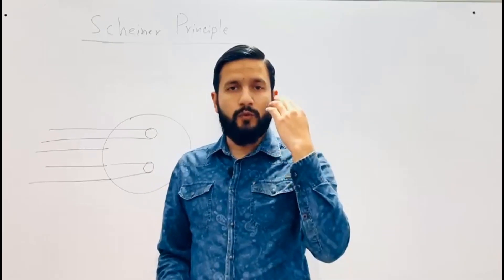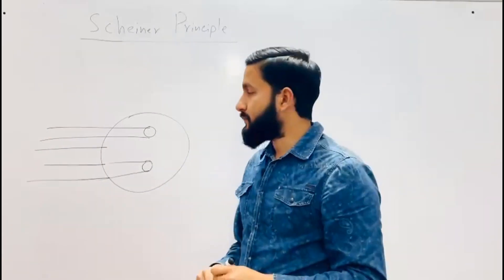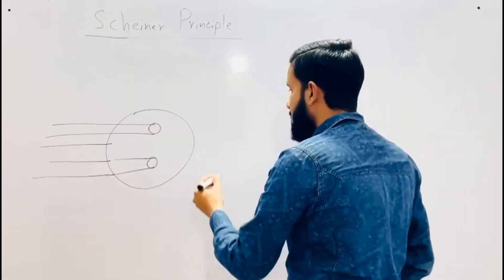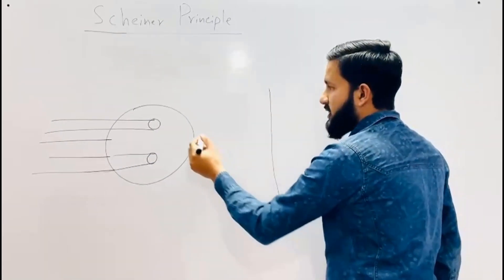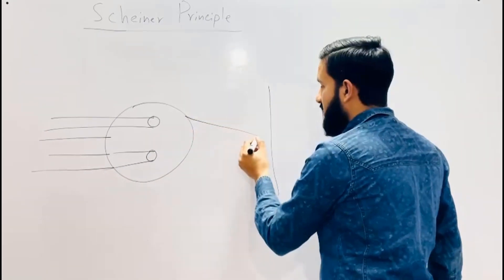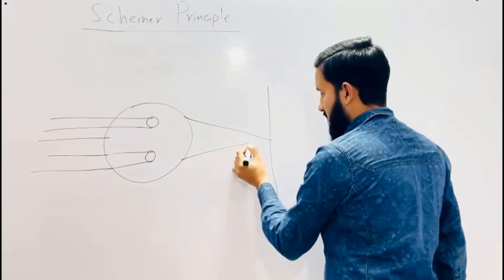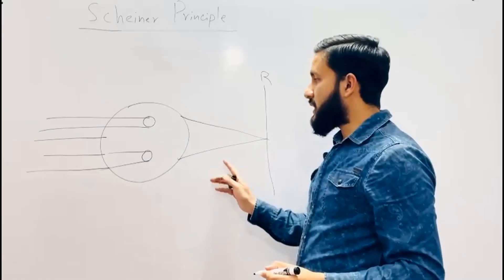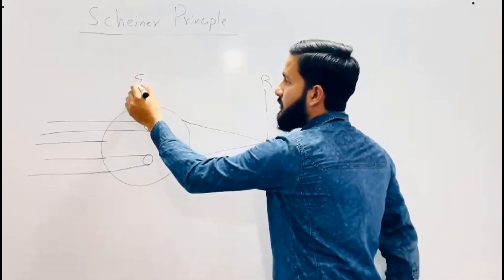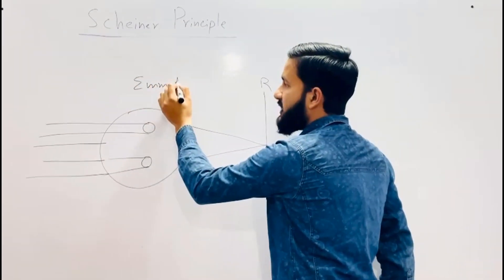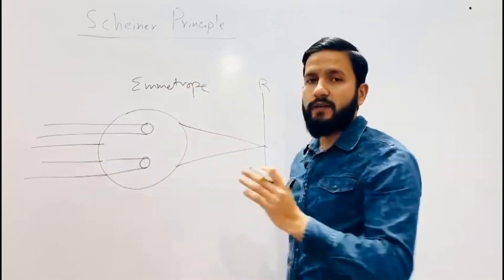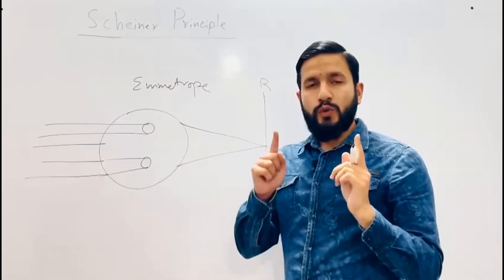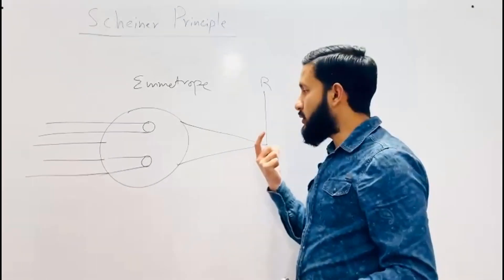These two bundles enter the eye, and you have to place the Scheiner disc in front of the pupil of the patient's eye. When light rays pass through these two pinholes, there is a possibility that they form a single focus on the retina. If this happens, it indicates that the patient is emmetrope — the patient has no refractive error.